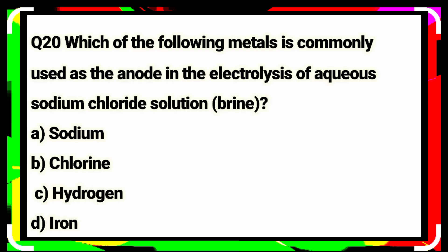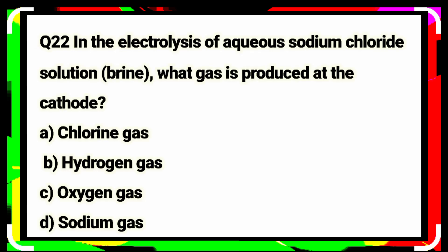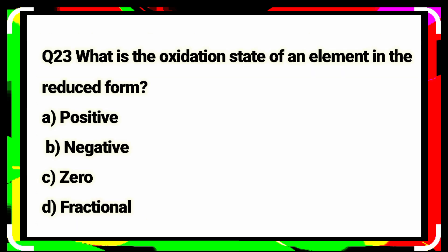Question number twenty: which of the following metals is commonly used as the anode in electrolytic processes? Iron. Option D is the correct answer. Question number twenty-one: what is the process of removing impurities from a metal through electrolysis? Electroplating. Option A is the correct answer. Question number twenty-two: in the electrolysis of aqueous sodium chloride, what gas is produced at the cathode? Hydrogen gas. Option B is the correct answer.